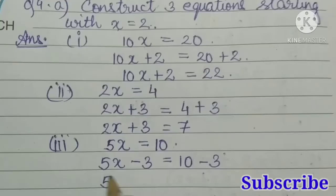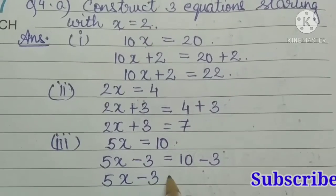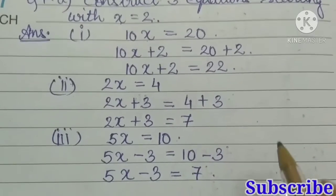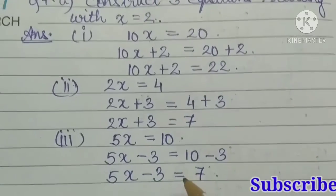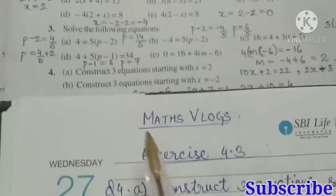So our third equation is 5x minus 3 is equal to 7. So we formed three equations.